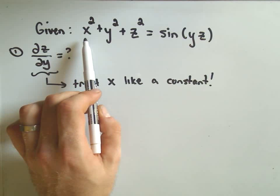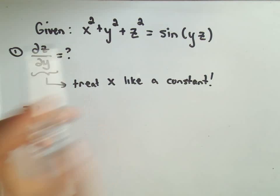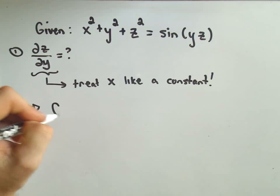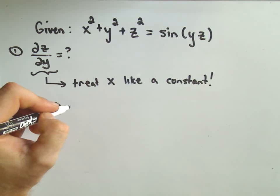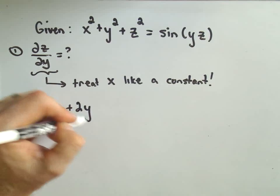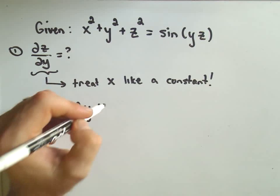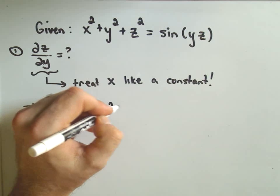Well, if I'm treating x like a constant, that means x squared is a constant. So the derivative of x squared will simply be zero. The derivative of y squared will be 2y. And now when we take the derivative of z squared, we'll get 2z.